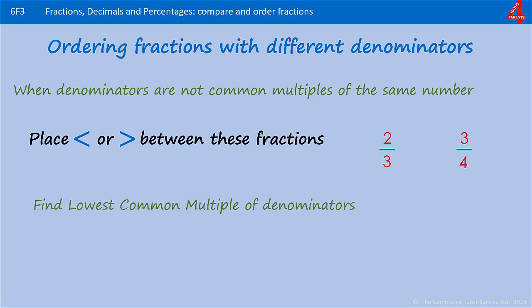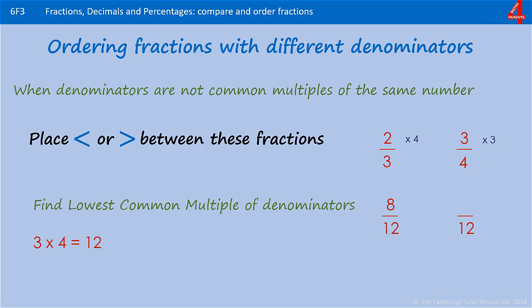First of all, find the lowest common multiple of the denominators. Again, with three and four we just multiply them together. We can make both the denominators 12. To get from 3 to 12 we multiply by 4, so we're going to do the same with the numerator, which is now 8. To get from 4 to 12 we multiplied by 3, so we're going to do the same with the numerator again, and this time we get 9.